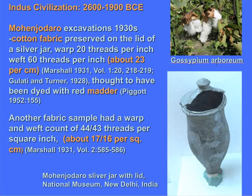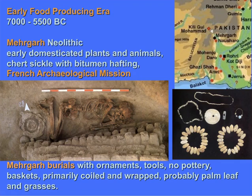This cotton would have been Gossypium arboreum, a variety thought to have been domesticated in South Asia. So back in the 1930s, they found the first evidence of cotton. But it wasn't until the 1970s, when the French Archaeological Mission began excavating at the site of Mehrgarh — located at the borders of Baluchistan and the Indus Valley at the base of a pass — that they found other evidence of cotton and the earliest evidence of cotton in the subcontinent.